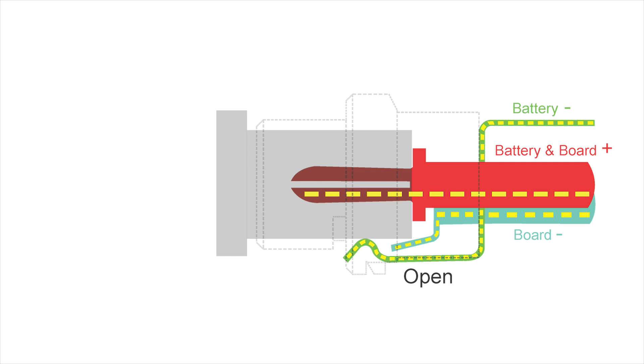With the switch in the open position, there is no power flowing from power negative to board negative. But with the kill key removed, your board or LEDs now have power because the circuit is closed.